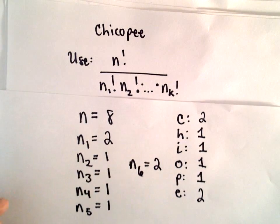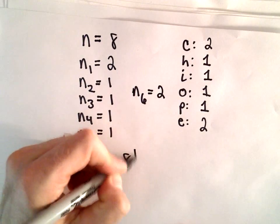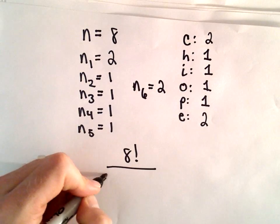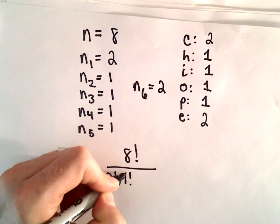Okay, so now I'm just going to fill in our formula here. So it says we'll have 8 factorial, and then we just stick factorials after each one of these numbers and multiply. So we would have 2 factorial, 1 factorial, multiply.